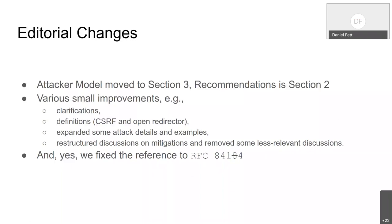The attacker model and recommendation sections switched places so that recommendations come first. We have various small improvements, mainly clarifications, better definitions in particular regarding cross-site request forgery in the context of what an open redirector is. We expanded on some of the attack details and examples to remove some ambiguities. The last section was restructured, and we fixed about a dozen or so incorrect references as well.